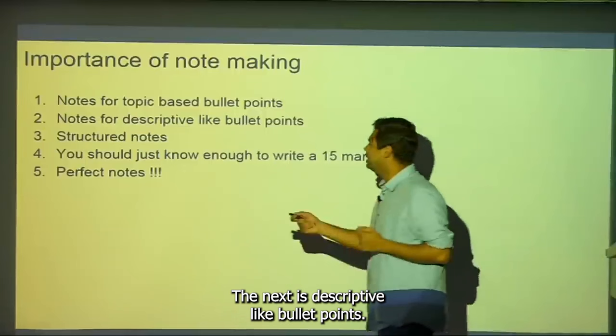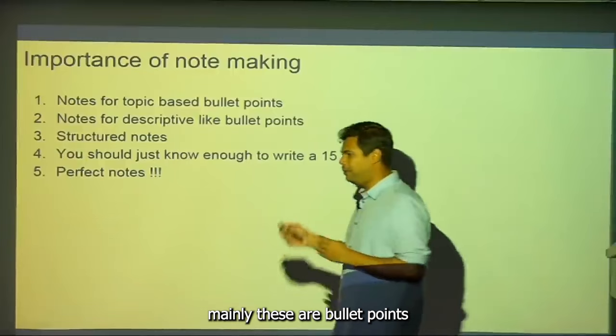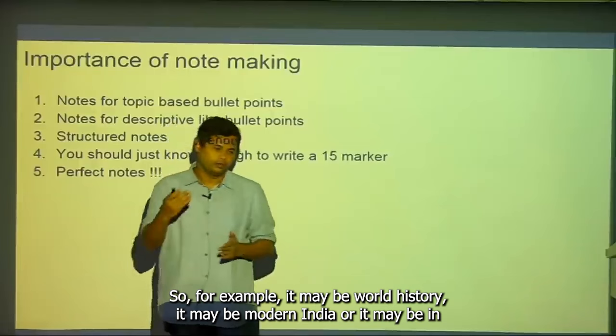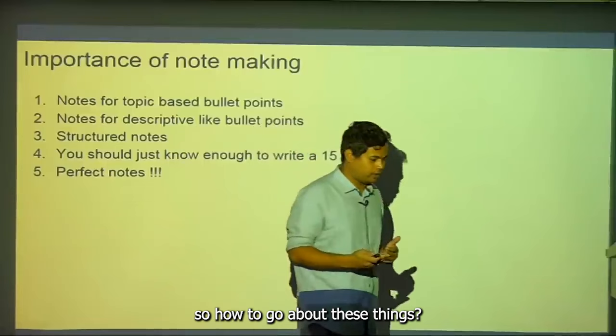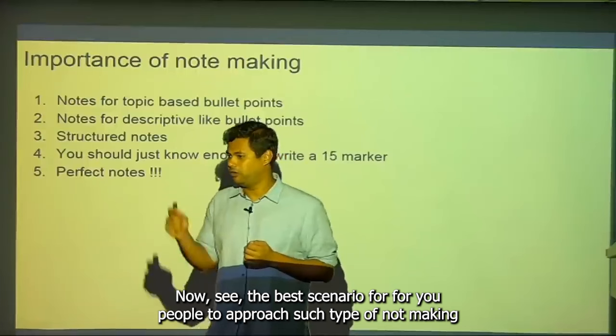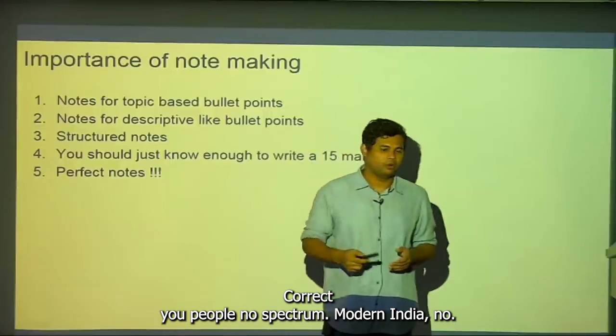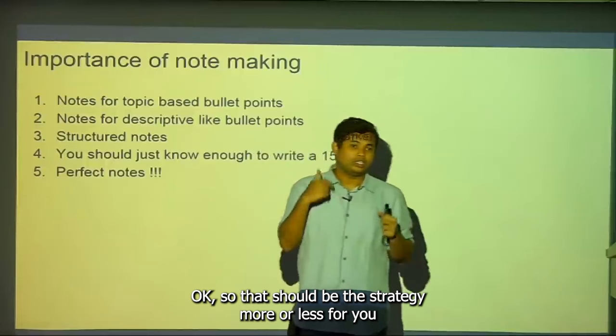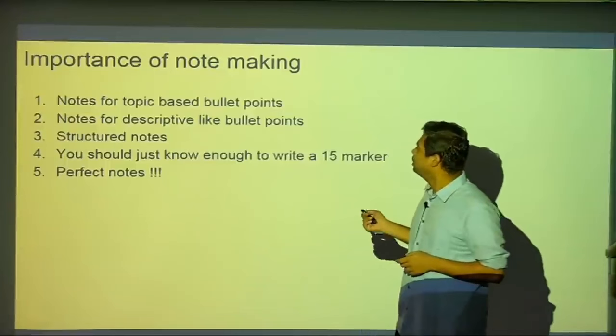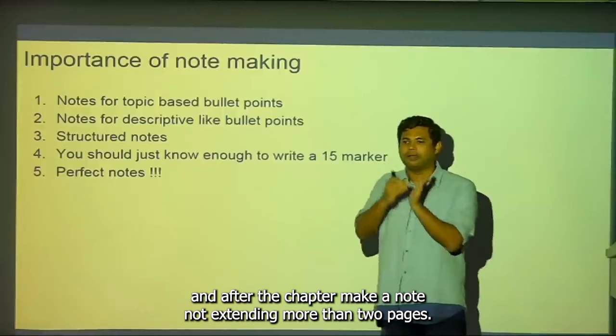For descriptive-like bullet points — such as world history, modern India, or the entire Parliament chapter in GS2 — the best approach is similar to how Spectrum summarizes each chapter in the last two to three pages. Your strategy should be to read the chapter and then make notes not exceeding two pages per chapter.